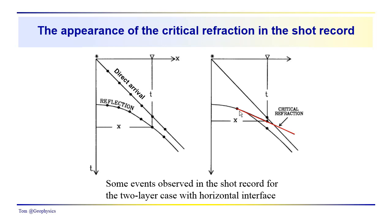What we're going to talk about today is the critical refraction. Notice that it is also linear. Just as with the direct arrival, which has a slope of one over the velocity in the upper medium, this linear feature — the critical refraction — may have a slope equal to the reciprocal of the velocity in the underlying medium, V2. Notice also that we have to go out a certain minimum distance from the source before we ever see a critical refraction.